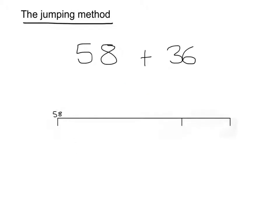The next method is called the jumping method. Here you would partition one of the numbers, so I am going to partition 36 into 30 and 6, and add in different stages. I am going to start off on 58, and then first of all I am going to add 30. So that means I am just adding 3 to the tens column here, so that would give me an answer of 88.